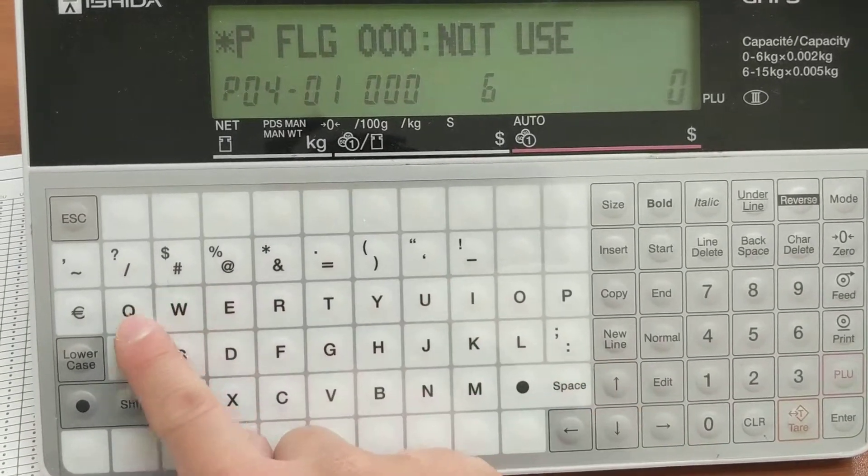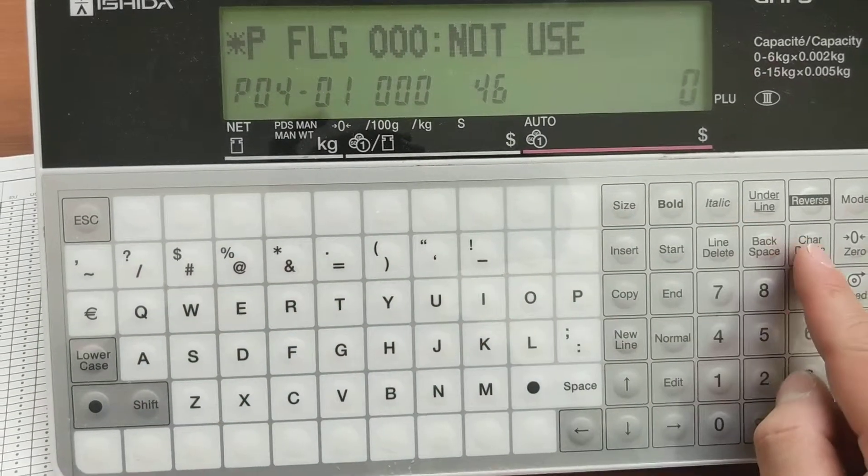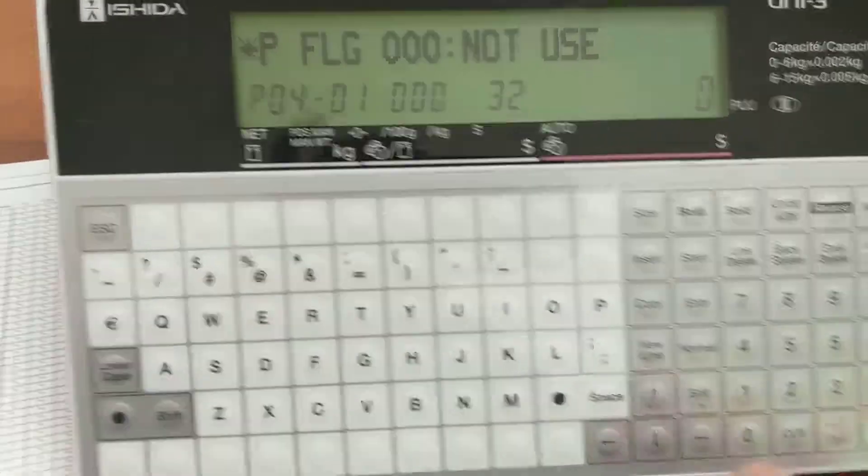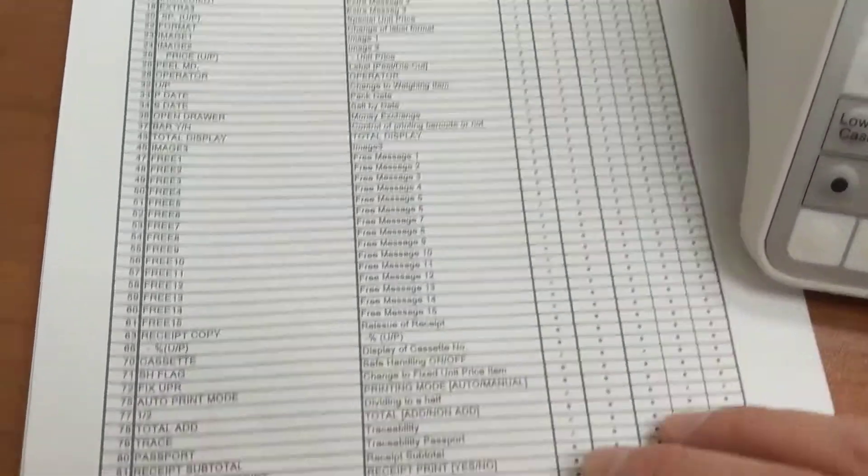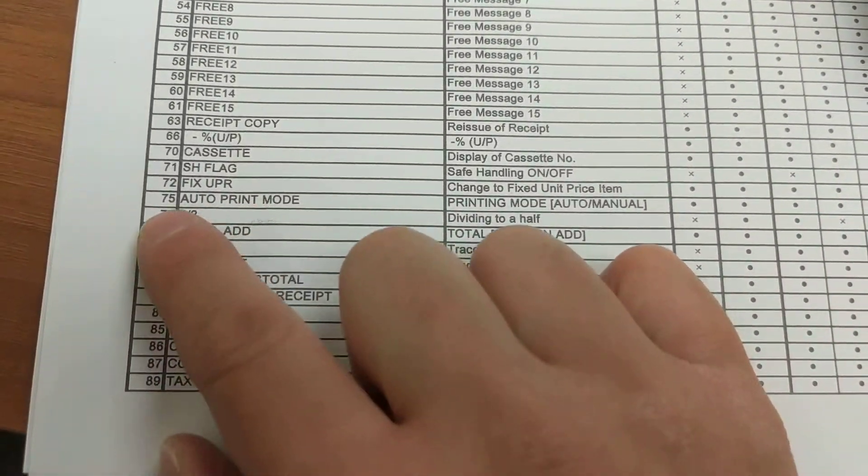So you can see here. The one above 9 is number 32. I have a list here of all my presets. The preset I want is auto print mode, number 75.